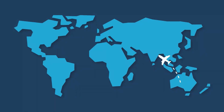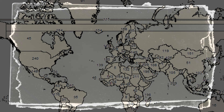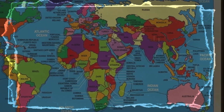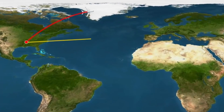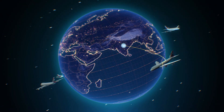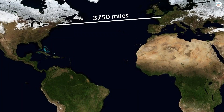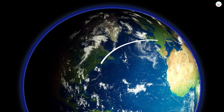We usually see these curved flight paths on maps, more specifically the Mercator projection, a map which distorts certain proportions of Earth. So while on a map the flight path might look curved, if you actually looked at it on a globe, you would notice that it's actually the most direct route. On the contrary, a straight line on a map will look curved and longer on a globe.